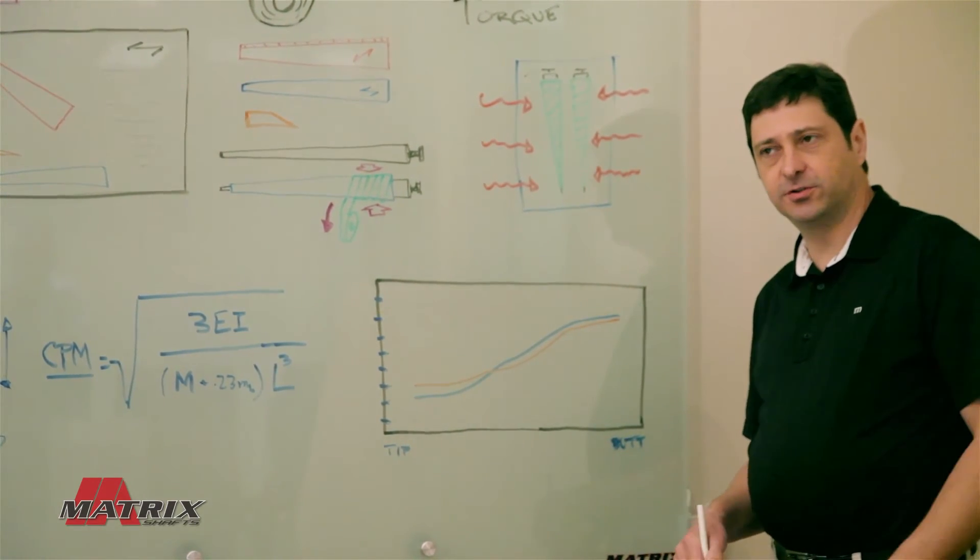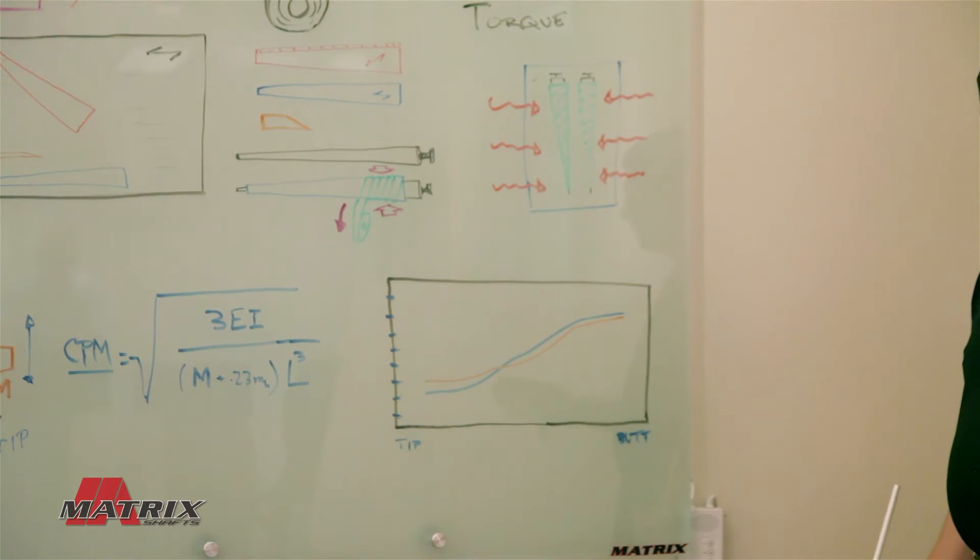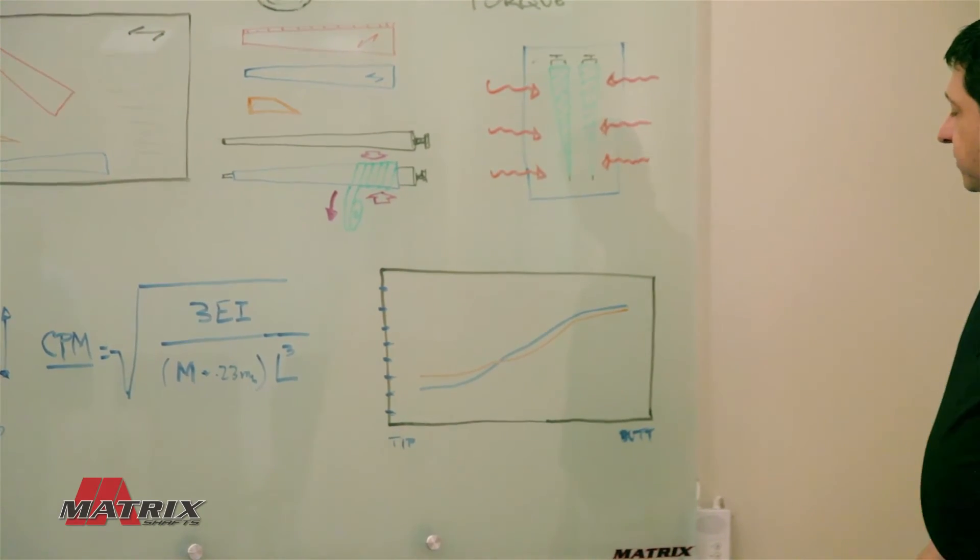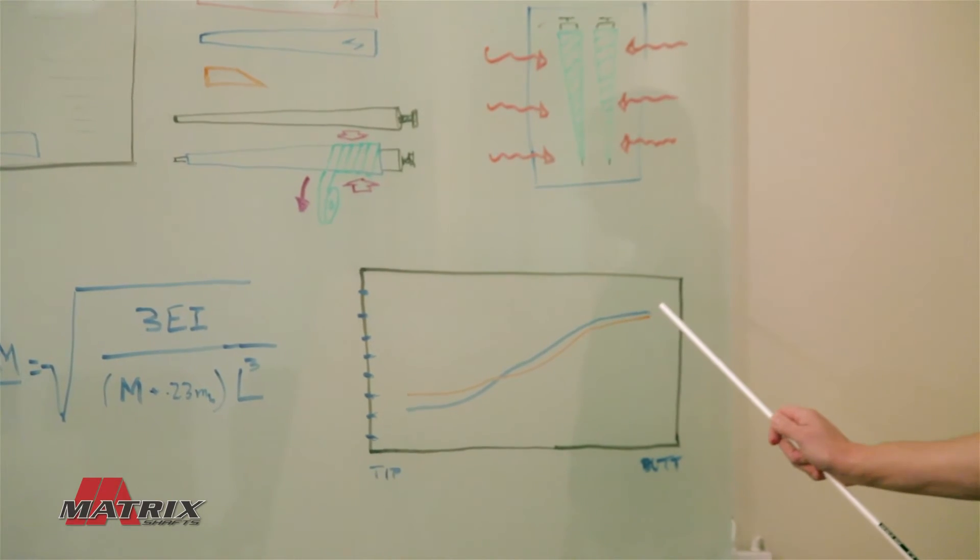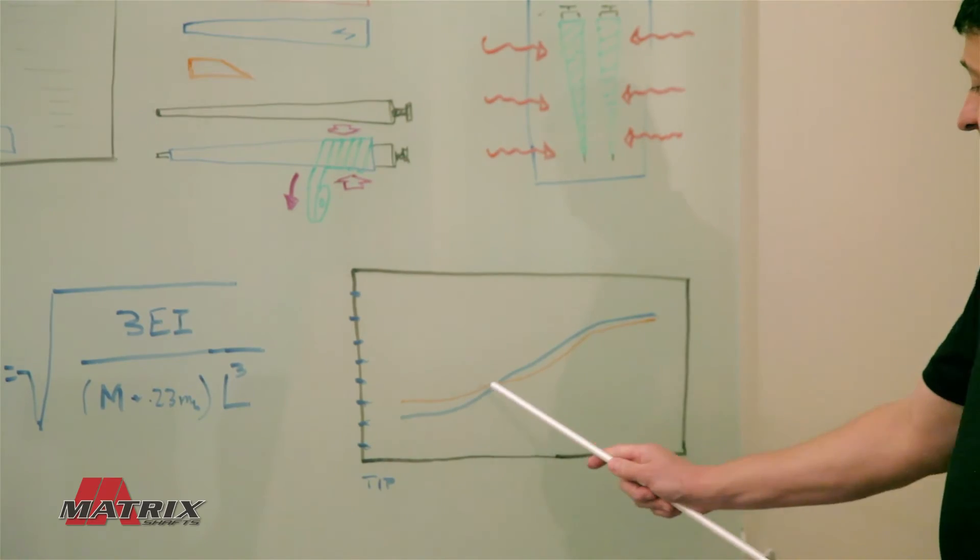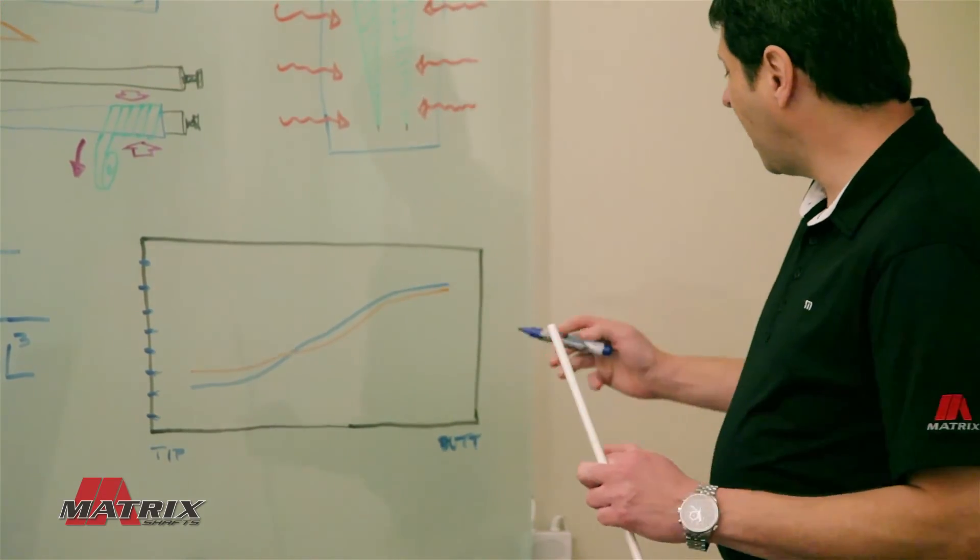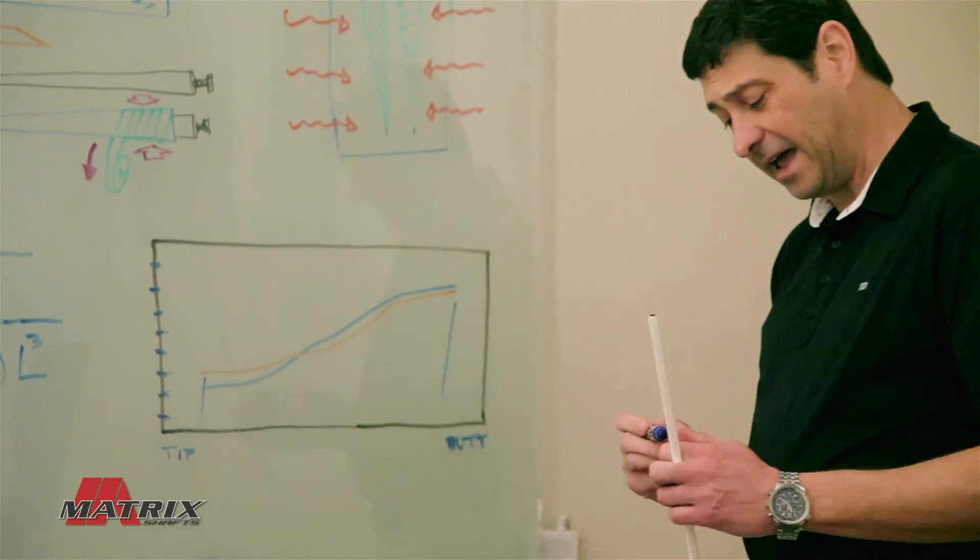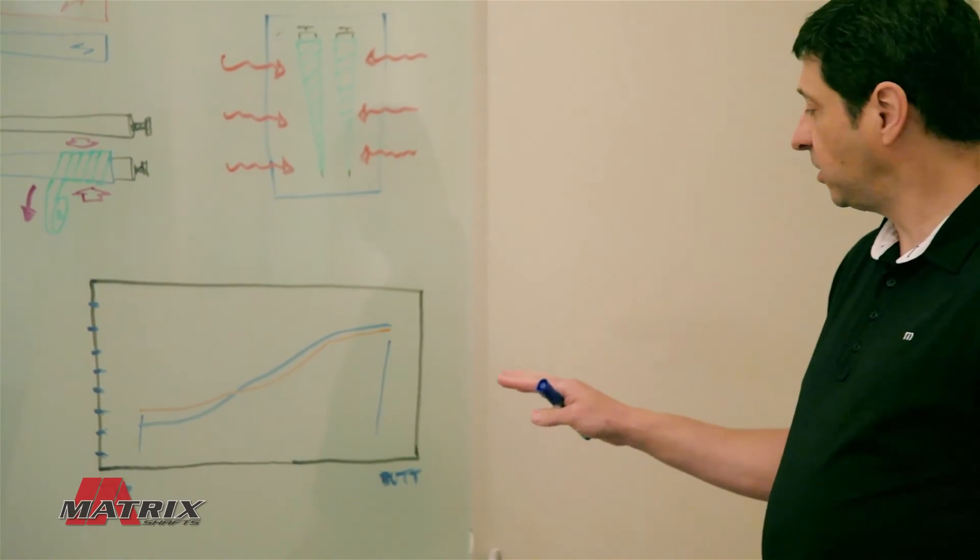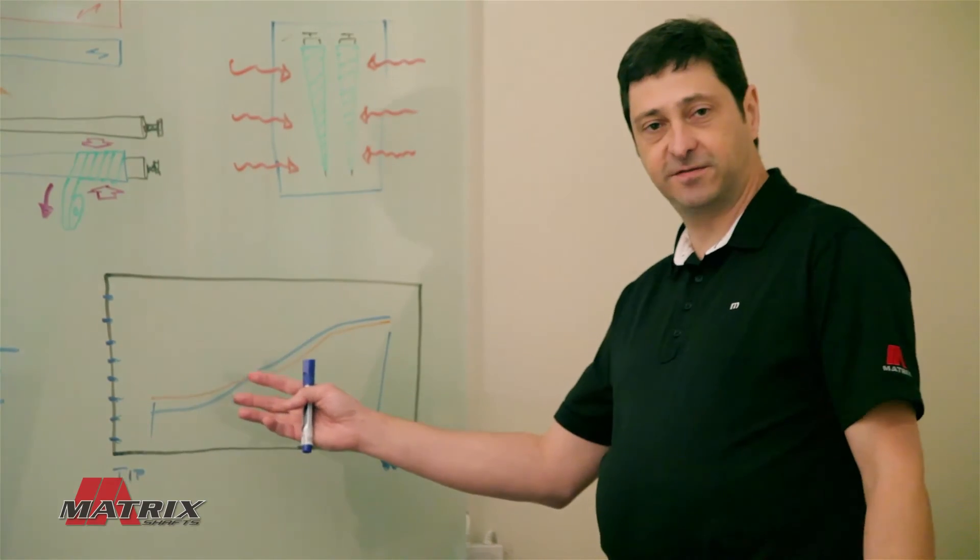If you're using CPM to compare shafts, the important thing to remember is that CPM or frequency is a normalized value. Now here we have an EI chart that has stiffness profiles of two shafts. One that is stiffer in the upper two-thirds of the shaft but has a soft tip section and the other shaft that has a stiff tip but is softer in the upper region. Now the area under both these two curves all adds up to be something very similar. So the CPM of these two shafts would be very close and that's why you can get the same CPM on a shaft that has a stiff tip or a soft tip.